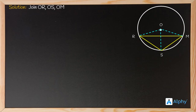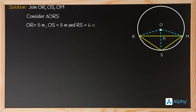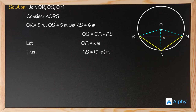On joining these, two triangles are formed. Both triangles are similar and we can obtain the value of RM. OS intersects RM at a point called A. Now consider triangle ORS: OR = 5 m, OS = 5 m, and RS = 6 m. OS can be written as the sum of OA and AS. Let OA = x meters, so AS = (5 − x) meters since total OS = 5 m.